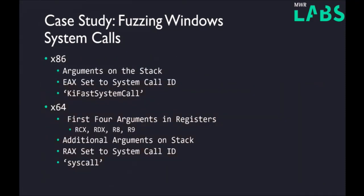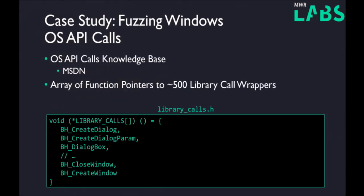A general reminder on how syscall invocation works on Windows: for x86 platforms, arguments are pushed on the stack in reverse order, EAX is set to the syscall ID, and a call is made to KiFastSystemCall. This is the case until Windows 7, which is the OS we've been mostly focused on — in Windows 8 and Windows 10 KiFastSystemCall has been inlined. For x64, the first four arguments are set in registers: RCX, RDX, R8, and R9. Any additional arguments are pushed on the stack, then RAX is set to the syscall ID, and the SYSCALL instruction is made to force transition into kernel space.